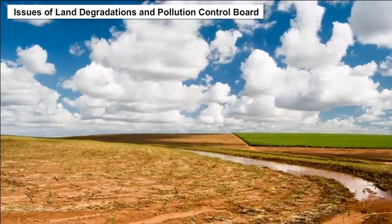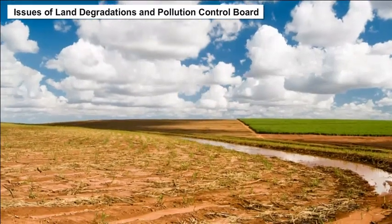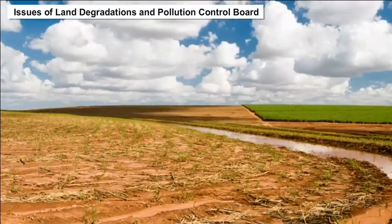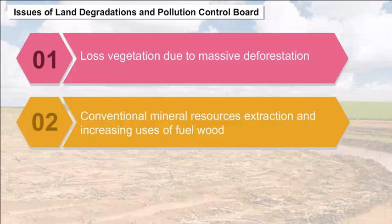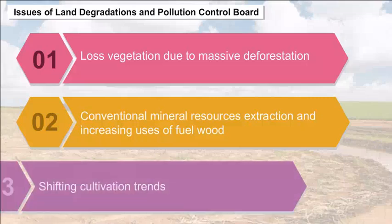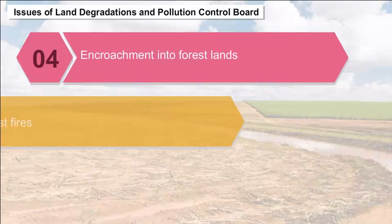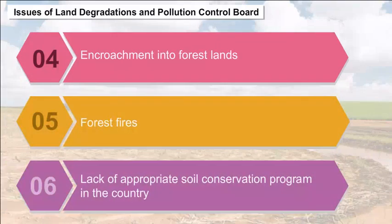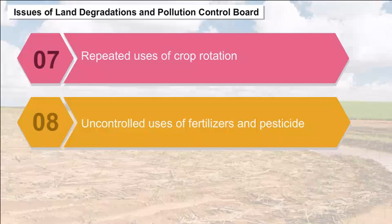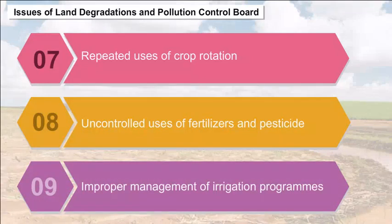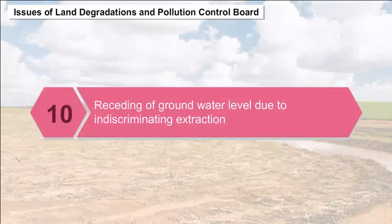Issues of Land Degradation and Pollution Control: Some important factors responsible for soil degradation in India are loss of vegetation due to massive deforestation, conventional mineral resource extraction, increasing use of fuel wood, shifting cultivation trends, encroachments into forest lands, forest fires, lack of appropriate soil conservation programs, repeated use of crop rotation, uncontrolled use of fertilizers and pesticides, improper management of irrigation programs, and the receding of groundwater levels due to indiscriminate extraction.